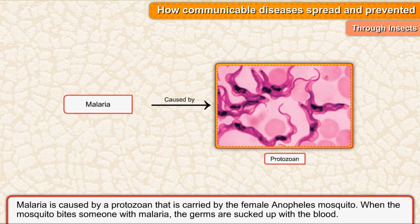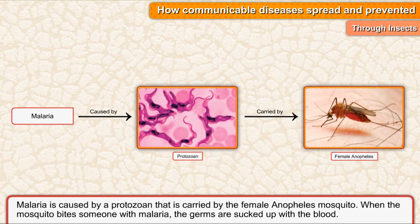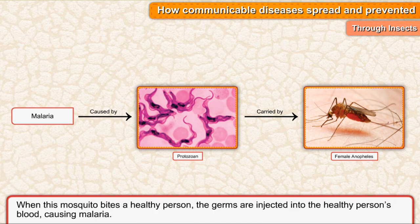Malaria is caused by a protozoan that is carried by the female Anopheles mosquito. When the mosquito bites someone with malaria, the germs are sucked up with the blood. When this mosquito bites a healthy person, the germs are injected into the healthy person's blood, causing malaria.